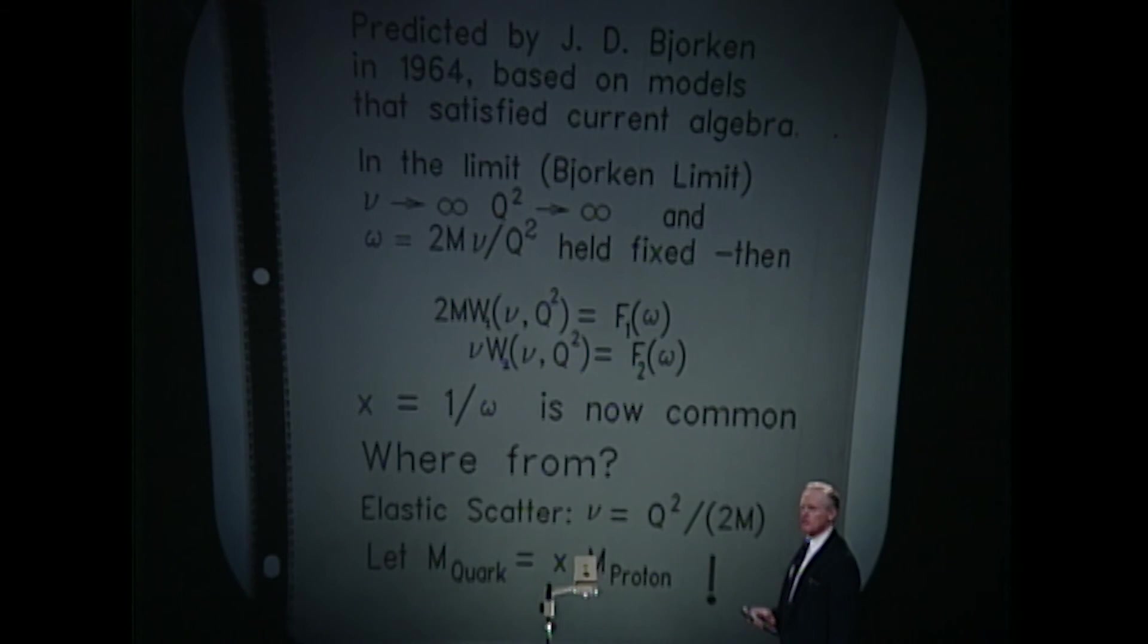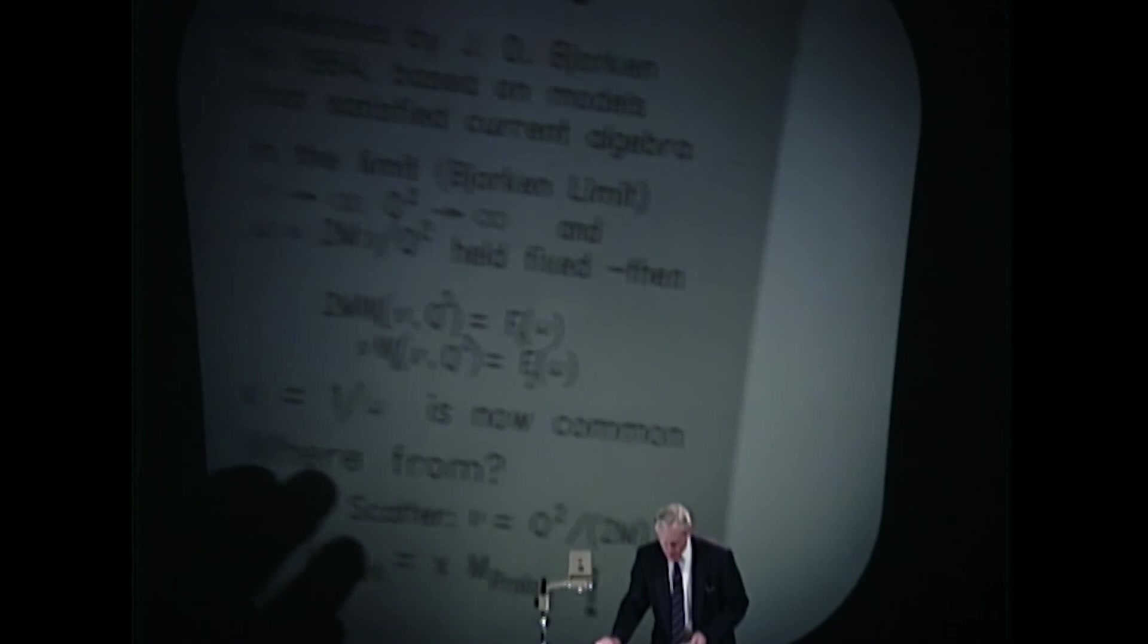To be specific about what BJ had done, as I mentioned, based on rather arcane application of current algebra, he had predicted what now bears his name, the BJ scaling and the BJ limit. To be specific, in the limit in which the energy loss goes to infinity, the momentum transfer likewise goes to infinity, that as this ratio is held fixed, 2m nu over q squared, that the quantity omega becomes the variable on which these structure functions depend.